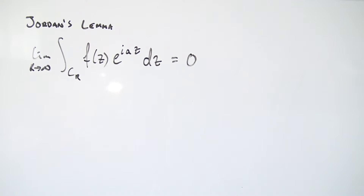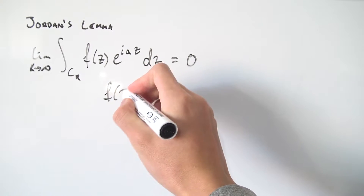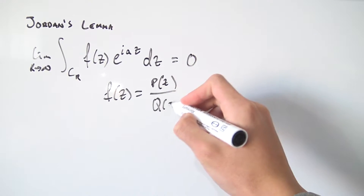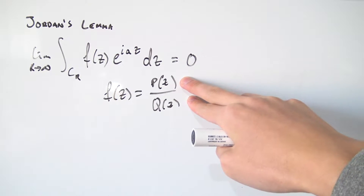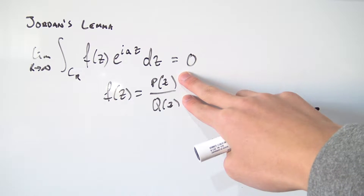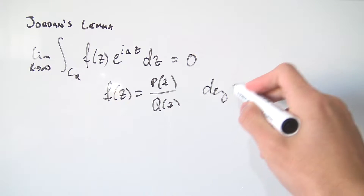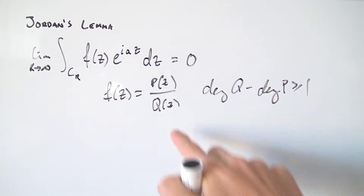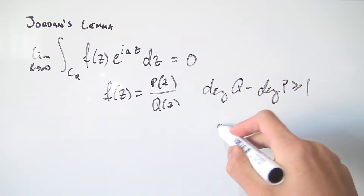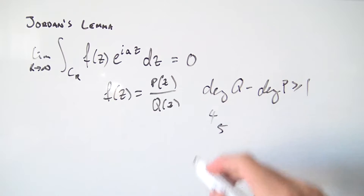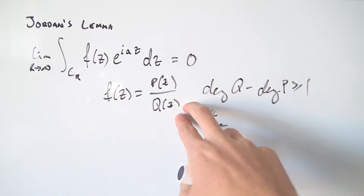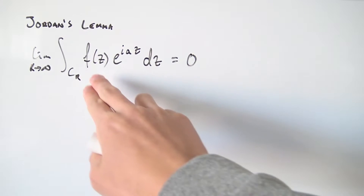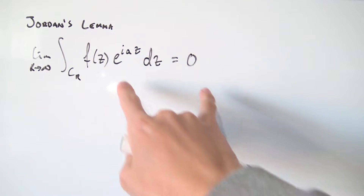We need to impose some kind of condition on our f(z), because one of the most common functions you'll deal with are rational functions. So if f(z) is some function expressible as p(z) over q(z), where p and q are generally complex polynomials, we actually need another condition: the degree of q minus the degree of p must be greater than or equal to 1. So if the degree of q is 5, the maximum degree of p can be 4.